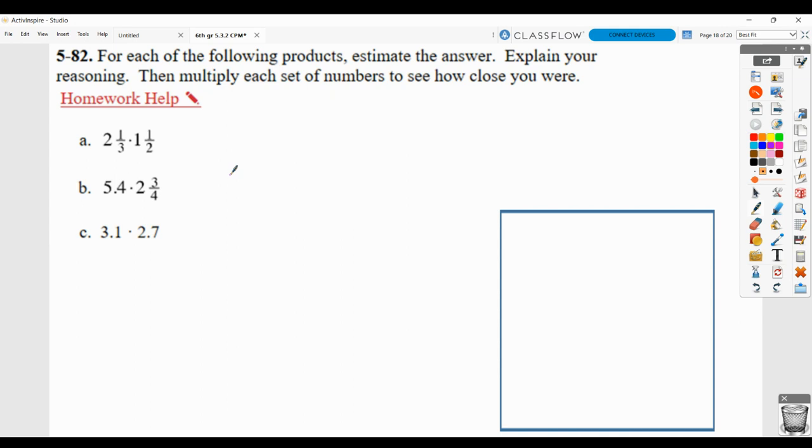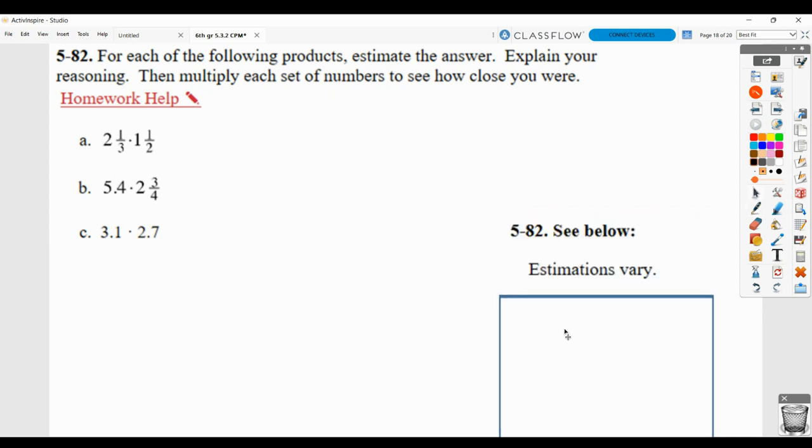Here you need to estimate first, and then go ahead and do the multiplication. So for the estimate, they're just telling you that they will vary. But again, you also had to kind of explain your reasoning. So for A, I might say for my estimate, well, 2 and 1/3 is close to 2. So this is my approximately equal to symbol. And 1 and 1/2 is halfway between 1 and 2. But since I rounded the first factor down, I might round this one up, since it is halfway. And so maybe I would say that my estimate is about 4.